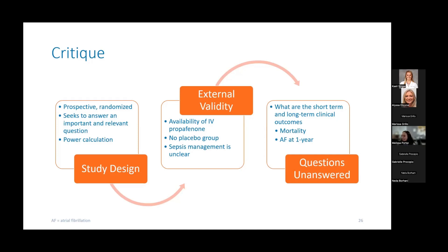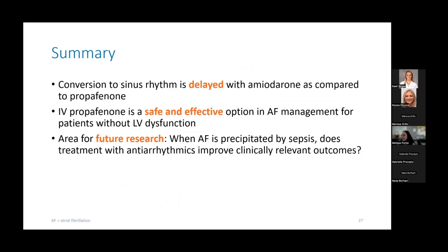Based on all of that, the questions that remain unanswered are what the short-term and long-term clinical outcomes are. I'm particularly interested in mortality and persistence of AFib at one year in these patients, and less interested in the 24-hour conversion rates to sinus rhythm. In summary, what I'm taking away from this study is that conversion to sinus rhythm is definitely delayed with amiodarone compared to propafenone, confirming what we already know about amiodarone's antiarrhythmic properties. IV propafenone was proven safe and effective in AFib management, specifically for patients without LV dysfunction. An area for future research would be whether treatment with antiarrhythmics improves clinically relevant outcomes when AFib is precipitated by sepsis and persists despite appropriate sepsis management.